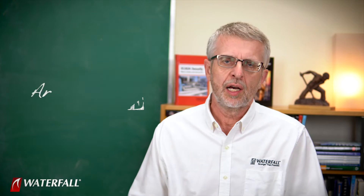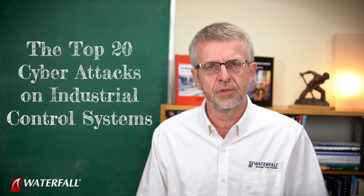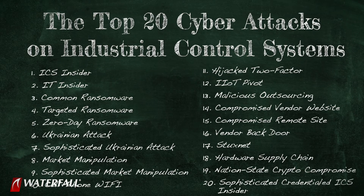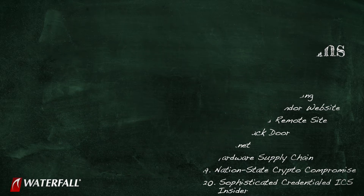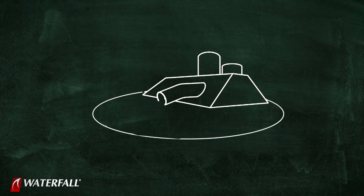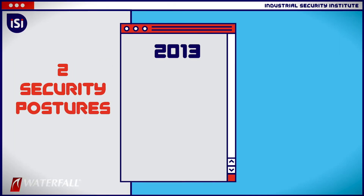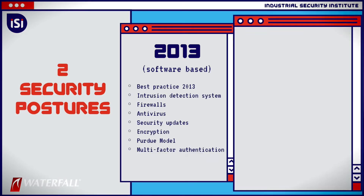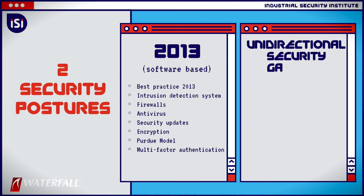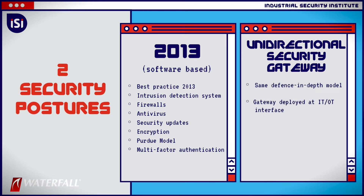Hello and welcome to Waterfall's Industrial Security Institute. I'm Andrew Ginter with Waterfall Security Solutions, and we are working our way through the top 20 cyber attacks on industrial control systems. We are using the top 20 cyber attacks to evaluate the strength of security programs for two example security programs for a hypothetical water treatment plant: a 2013 vintage program using a lot of software best practices, and that same 2013 program with the addition of a unidirectional security gateway deployed at the IT/OT interface instead of the IT/OT interface firewall.